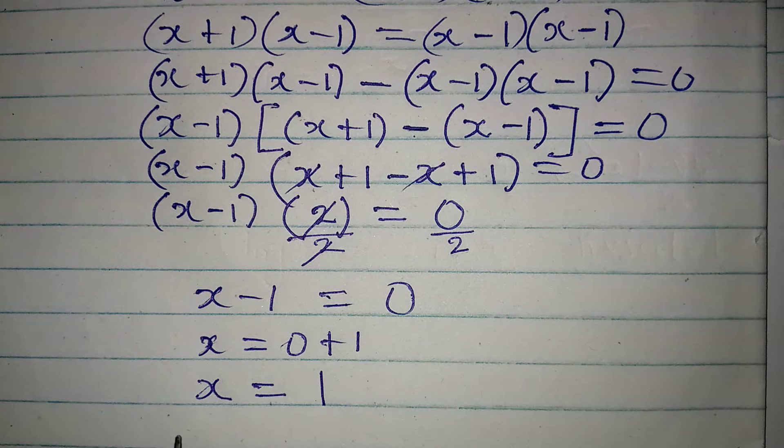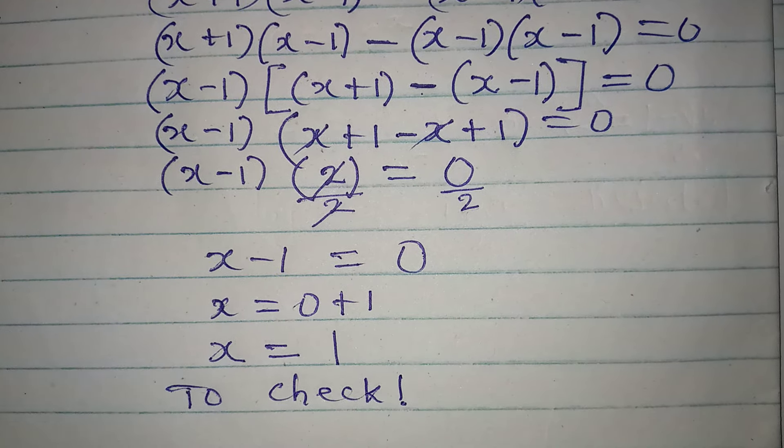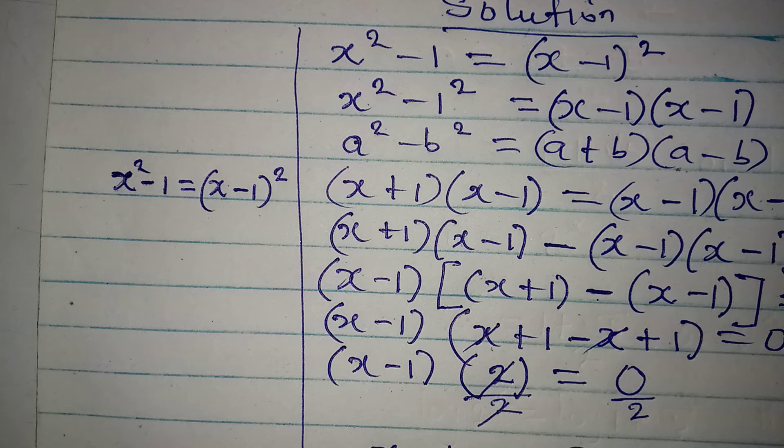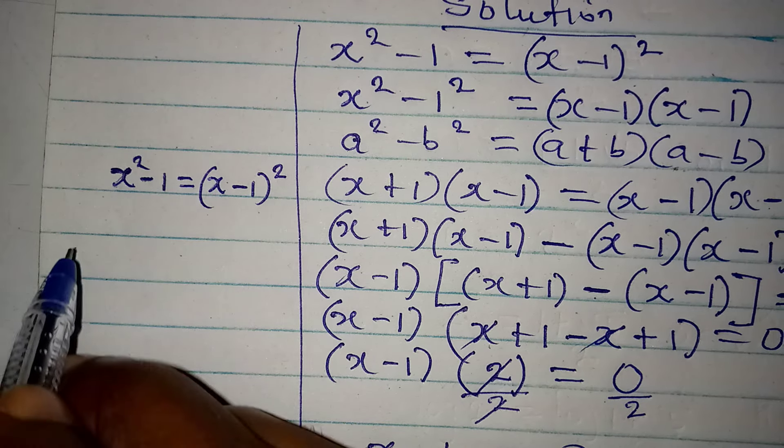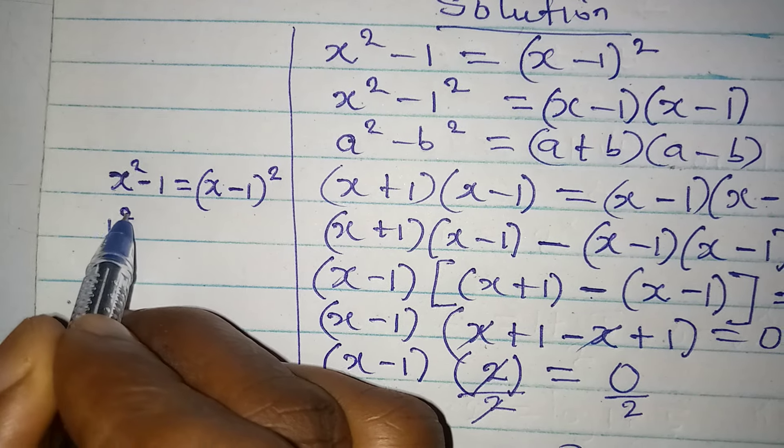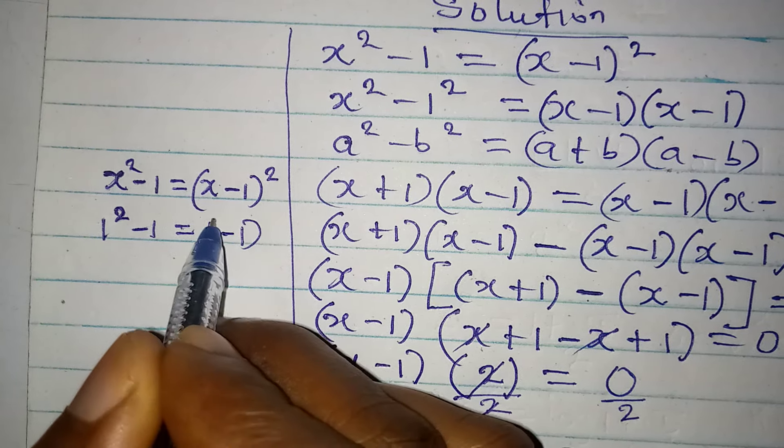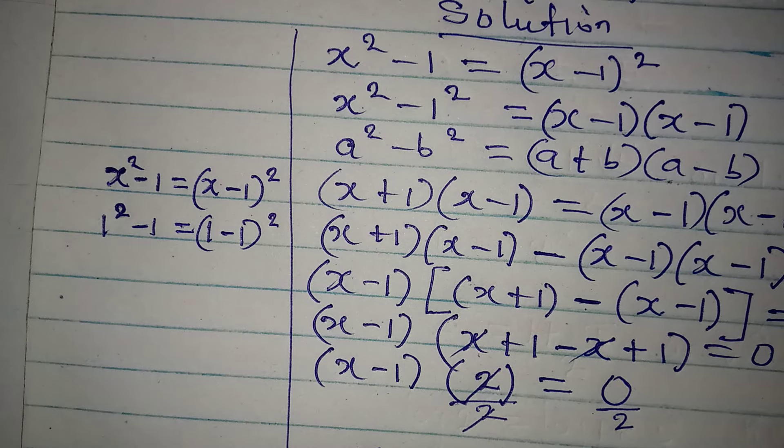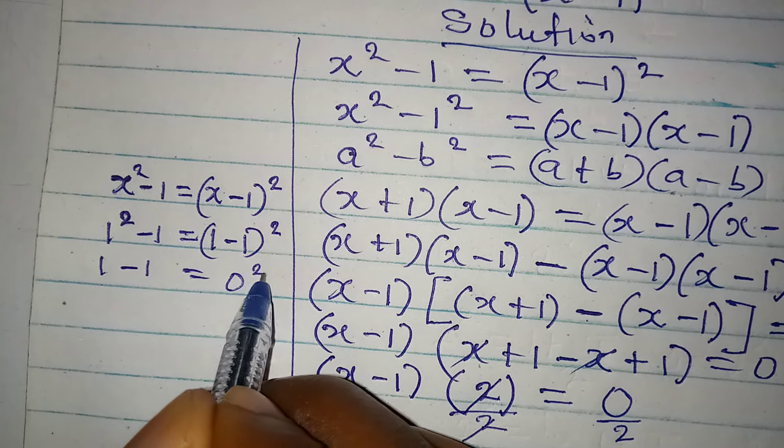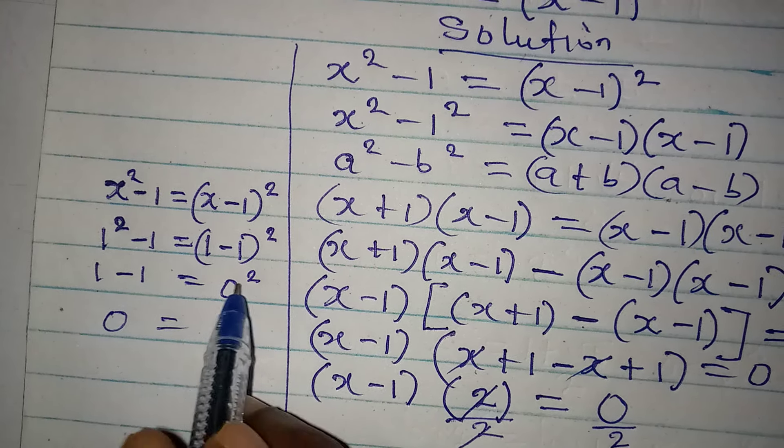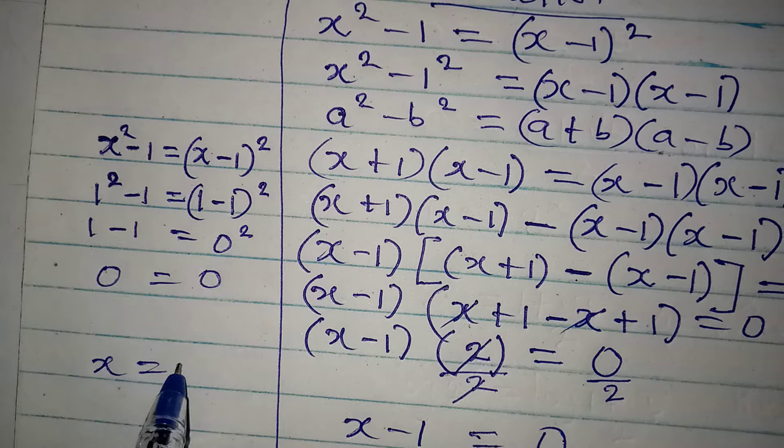Now to check, let me write the original equation again. This is the original equation and we are having x to be equal to 1. Now, 1 squared is what we have here. 1 squared minus 1. Do you think it will be equal to 1 minus 1 squared? Yes, it will be equal because 1 squared will still give 1 minus 1. And then from here we are having 0 squared. 1 minus 1 is 0, and 0 squared is 0 times 0, which will give 0. So this is to confirm that x is equal to 1.